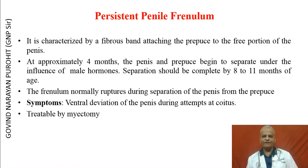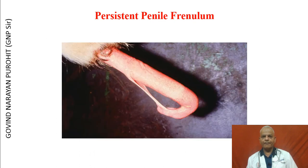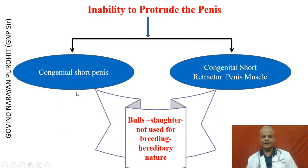Persistent penile frenulum is the most common problem. It is characterized by a fibrous band attached to the prepuce to the free portion of the penis. At approximately 4 months, the penis and prepuce begin to separate under the influence of male hormones. Separation should be complete by 8 to 11 months of age. The frenulum normally ruptures during separation of the penis from the prepuce, and if it persists, it results in ventral deviation of the penis during attempts at coitus. It is treated by myectomy. A bull with persistent penile frenulum can be surgically excised and may recover.